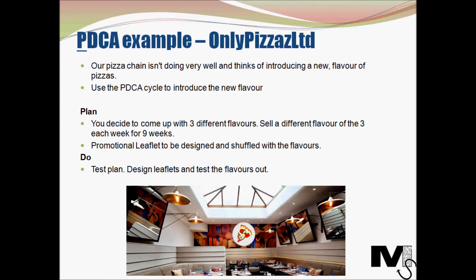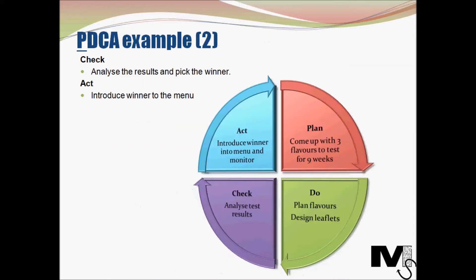In the planning stage, you decide to come up with three flavors. You are to sell a flavor each week for nine weeks. You also decide on an individual promotional leaflet per flavor, to be handed to customers with the menu. The leaflets will be shuffled in accordance with the weekly offering. So we've essentially now planned how we would actually run the test, and we go on to the Do stage where you design the leaflet and the planned tests go ahead. The next stage is the Check stage, which in our example will come after the conclusion of the nine-week testing period.